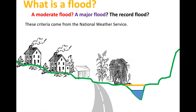A flood is anytime the water level is above the river's banks — above that level, the river spills out of its banks and onto its floodplain. And maybe in some cases, the water can rise some distance into the floodplain without really causing much damage. So this is a flood, but it's not a flood that has a major effect on people.